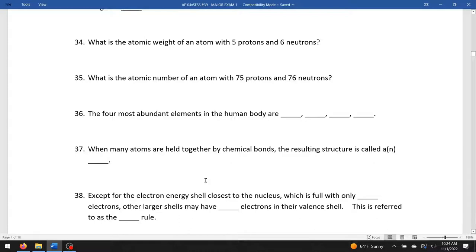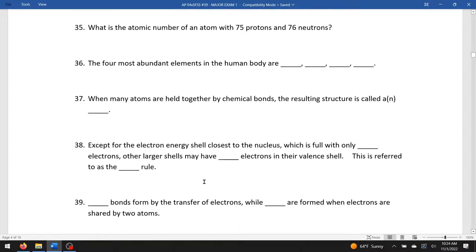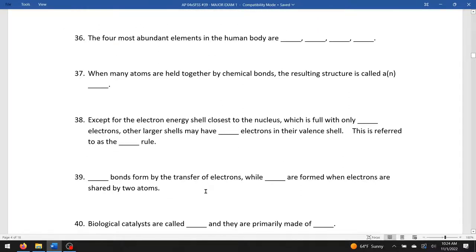Blank bonds form by the transfer of electrons. If you do a transfer, that's an ionic bond. While blank are formed when electrons are shared and that's a covalent bond. Biological catalysts are called enzymes and they are primarily made of protein.